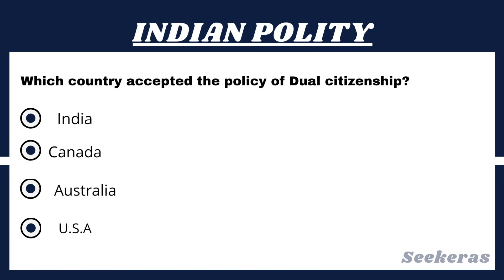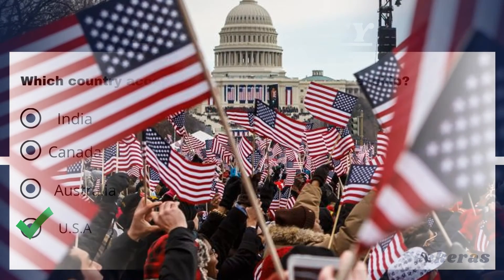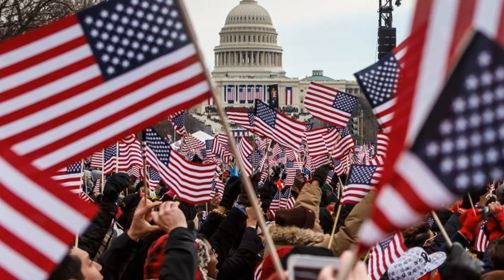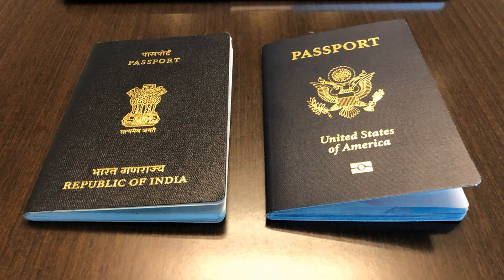Question number 6. Which country accepted the policy of dual citizenship? Option 1, India; Option 2, Canada; Option 3, Australia; or Option 4, USA. The answer is Option 4, USA. Dual citizenship or dual nationality means being a citizen of two countries simultaneously and sharing the rights and responsibilities of the citizens in each country.